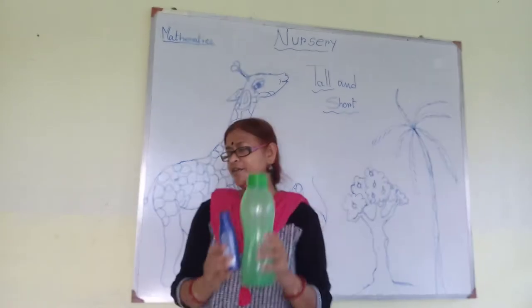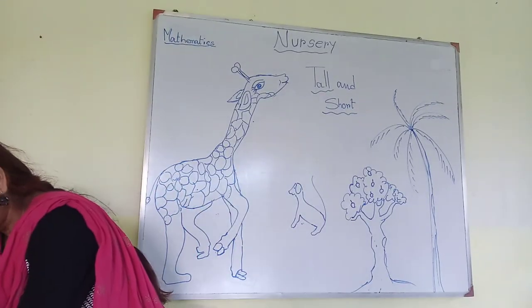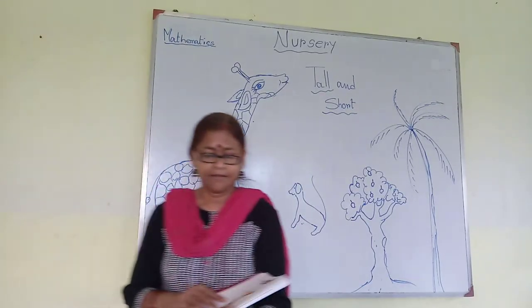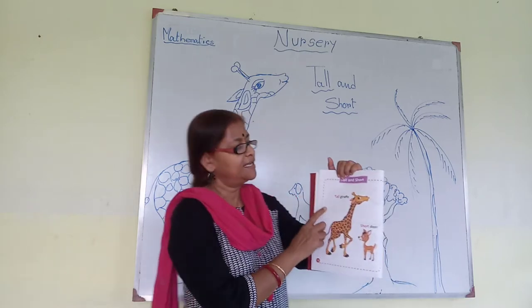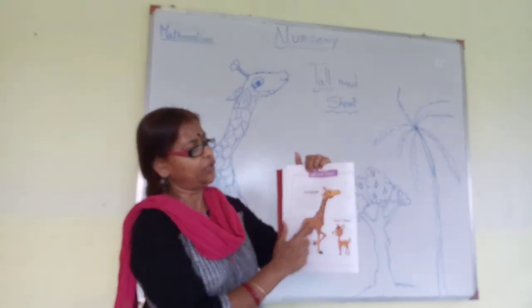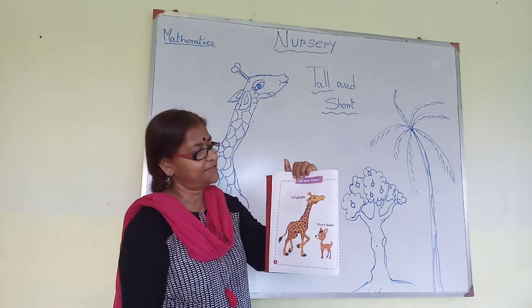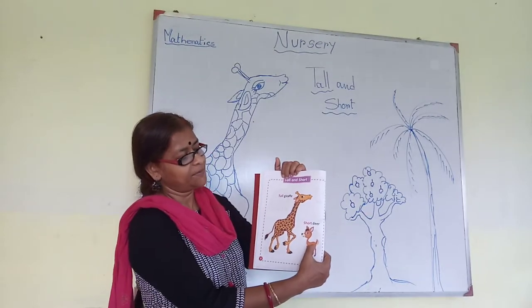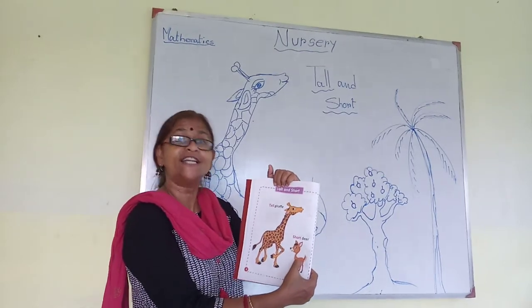Understood? Then, look at the picture. Here is a picture of a tall jeera. And here is a picture of a short deer.